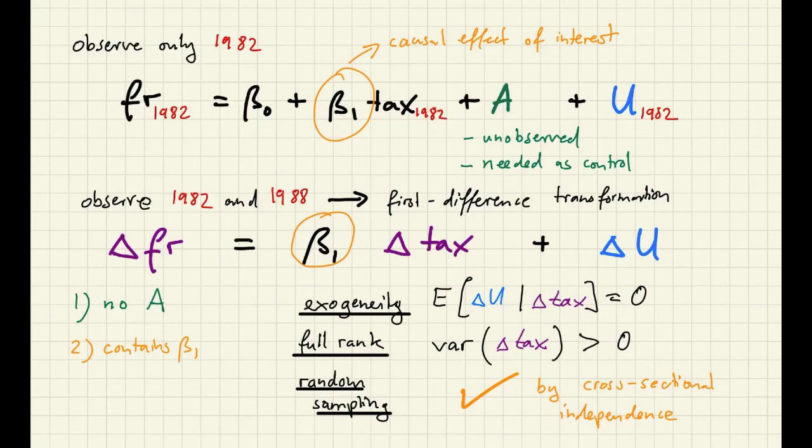Let's summarize what we have accomplished here. We've started out with this model that contained a causal effect that we were interested in. But this model was infeasible because we didn't observe this variable, and we have to include this variable as control because otherwise we'll have omitted variable bias. We managed to transform this model into something that is estimable with the data that we have. And the transformed model contains the same coefficient. This coefficient is estimable by OLS under certain assumptions.